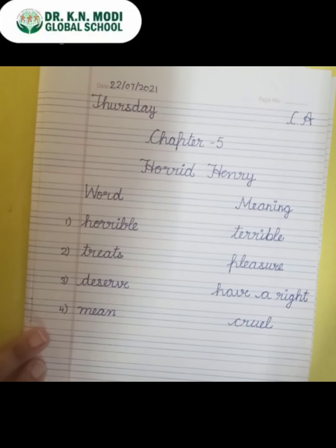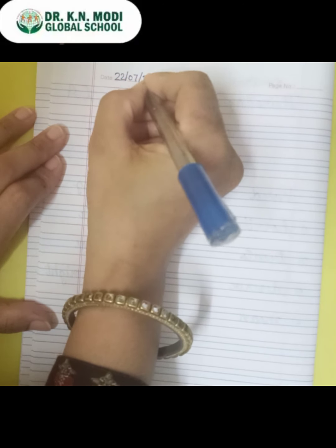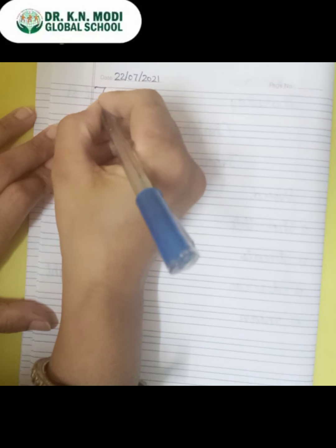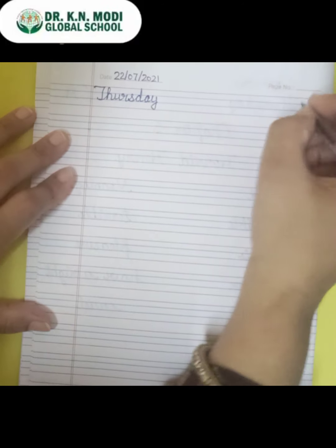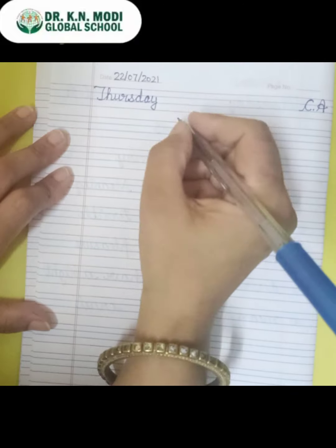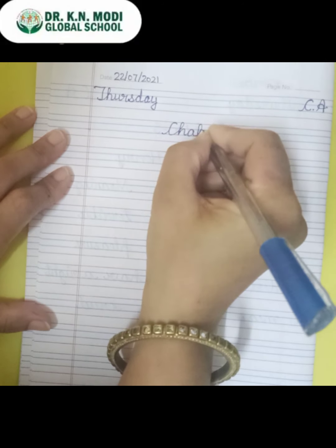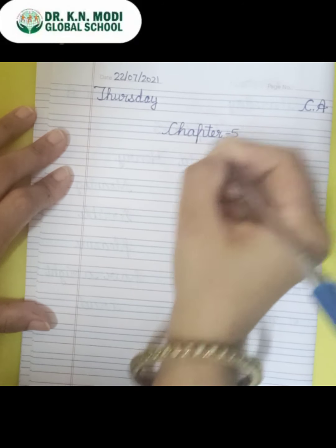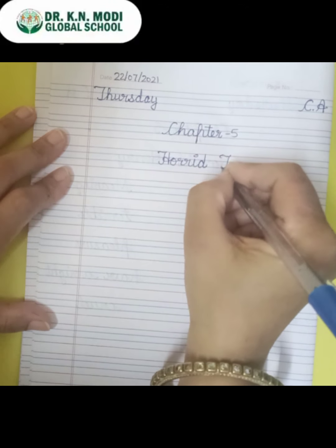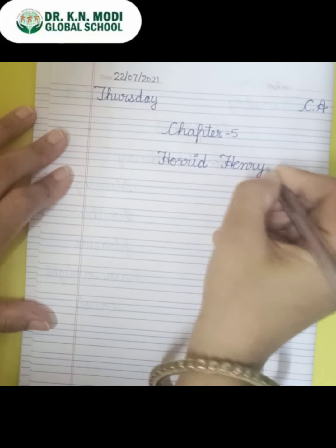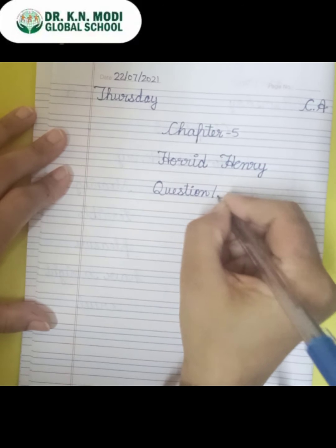Now students, come to the next page. We will start doing question answers of this chapter. Write down today's date again — 22nd July 2021 — and mention the day, Thursday. Write down CA and mention Chapter 5, Horrid Henry. Write down: question answers.